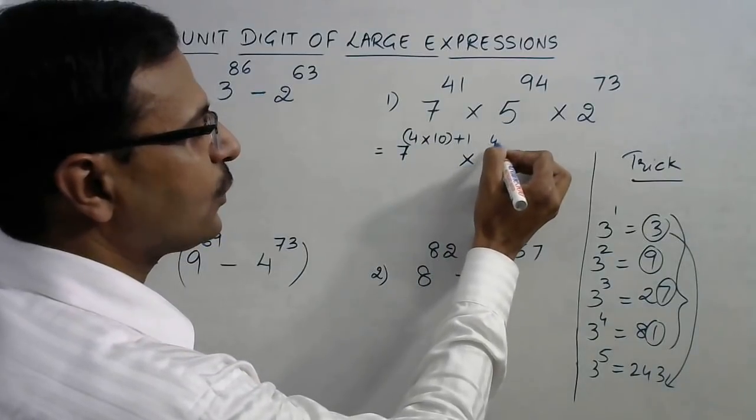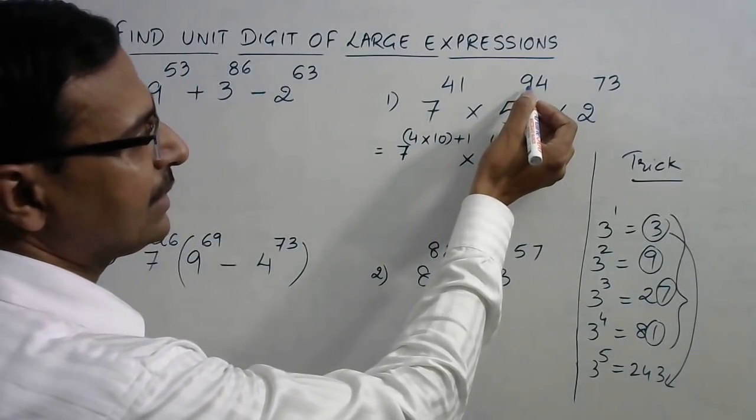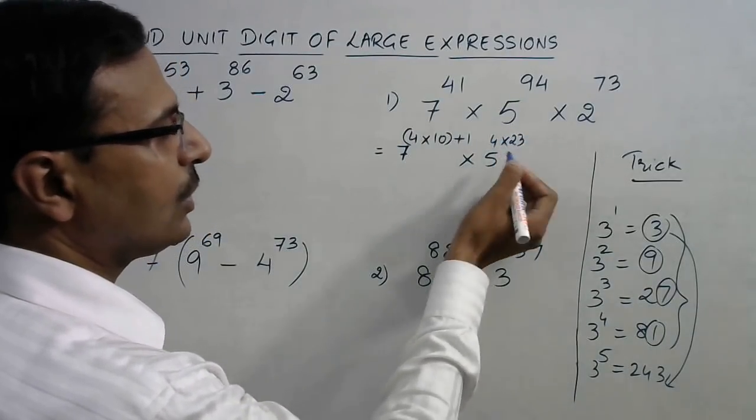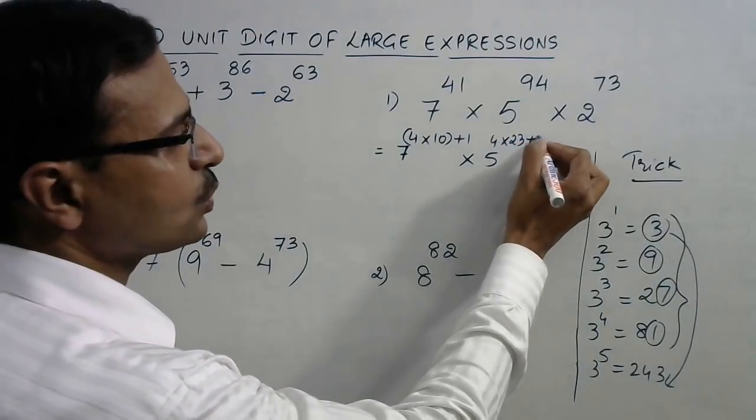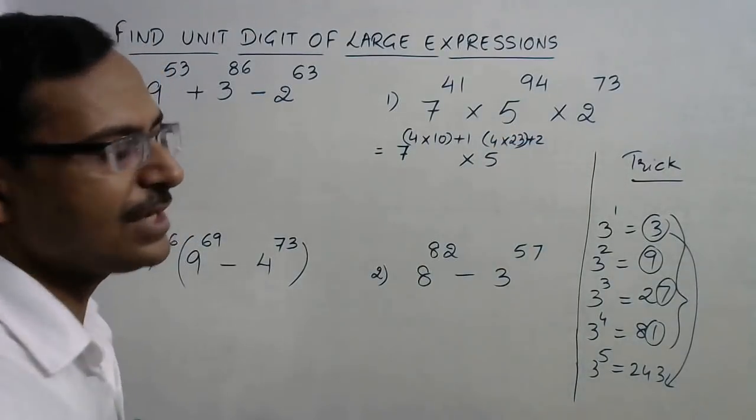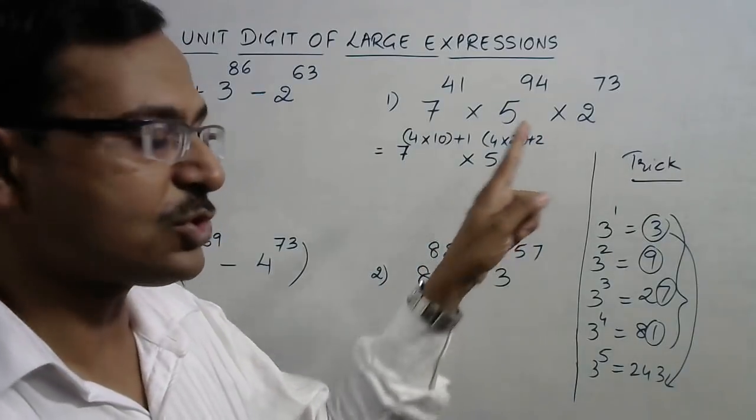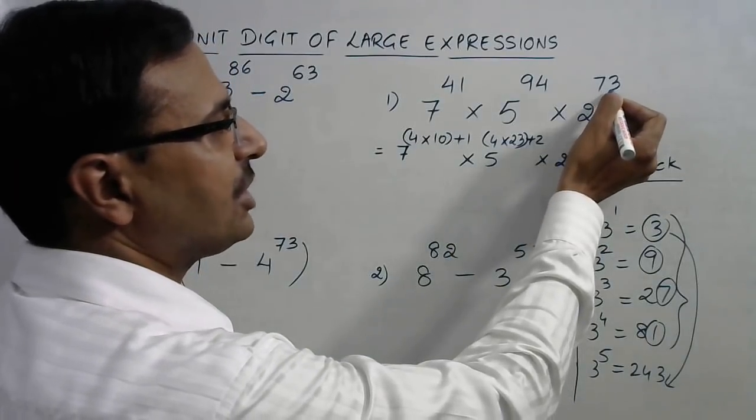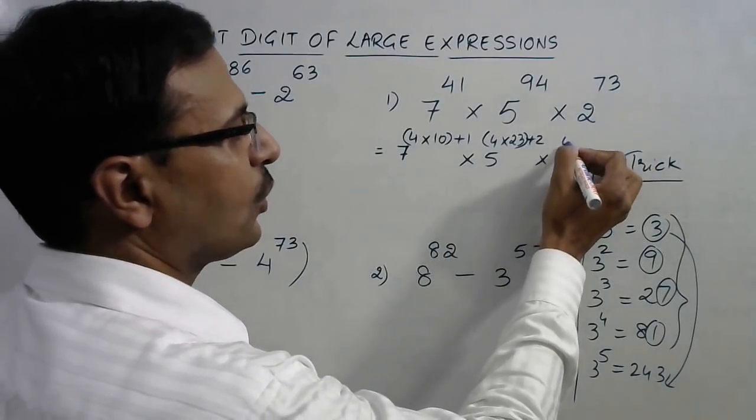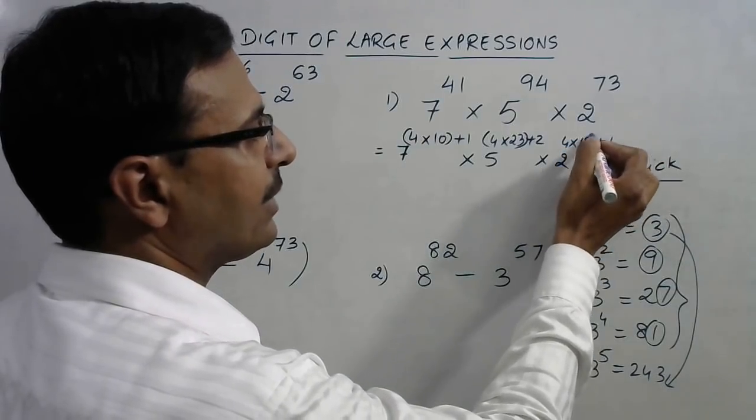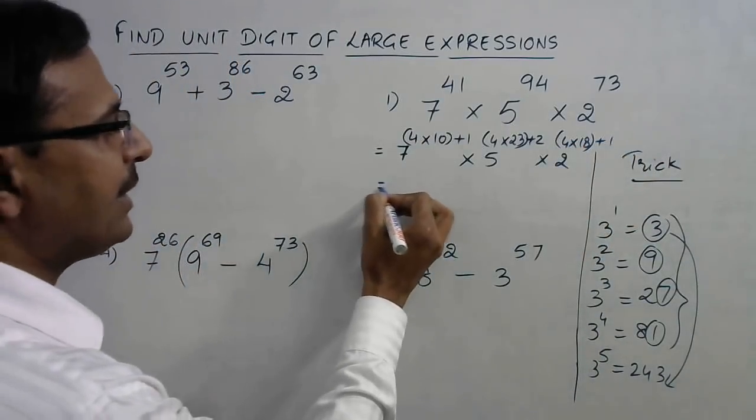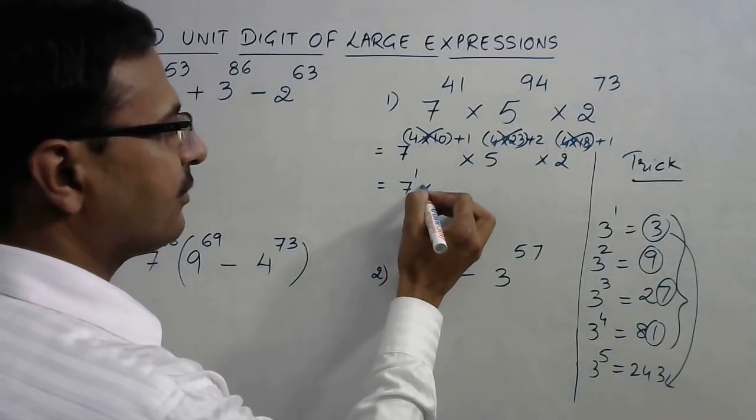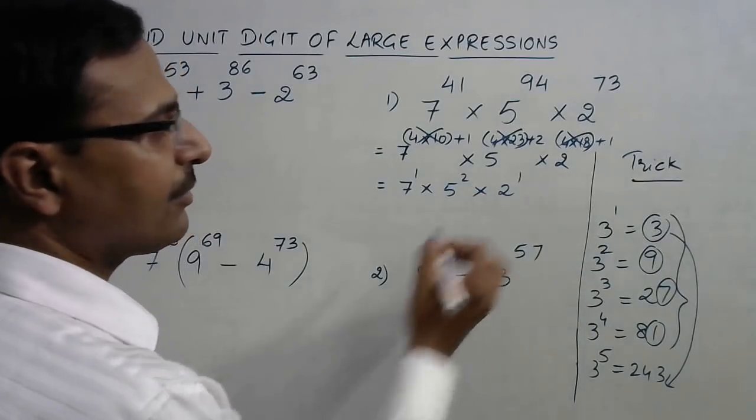Then 5 raised to power 94. 94 means 4 into—this is 24 into 4 is 96, so 23 into 4, 92 and plus 2. So, this 4 into 23, we will eliminate from here and we will have only 5 raised to power 2 left behind. Similarly, we have 2 raised to power 73. We know that 72 is divisible, so 4 into 18 is 72 and we have one more power. Now eliminate all these multiples of 4. We have 7 raised to power 1, 5 raised to power 2 and 2 raised to power 1.